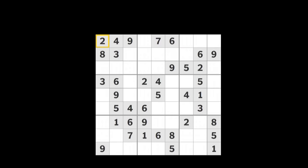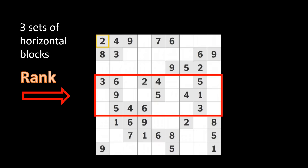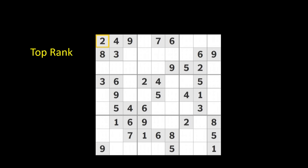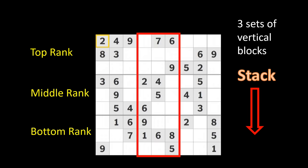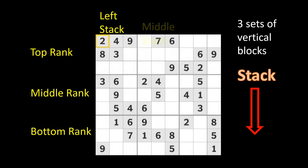Just to review, a nine by nine Sudoku puzzle is made up of three sets of horizontal blocks. Each of these is called a rank, and they go across horizontally with a top rank, a middle rank, and a bottom rank. And then we have three sets of vertical blocks, and these are called stacks, and they go down vertically. These are referred to as the left stack, the middle stack, and the right stack.